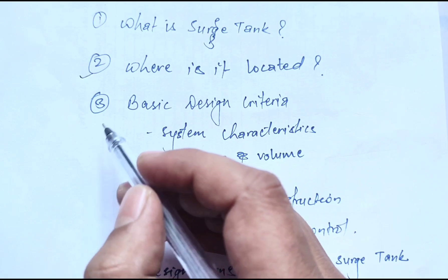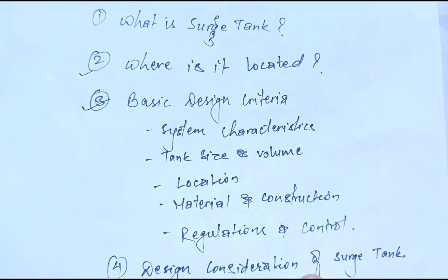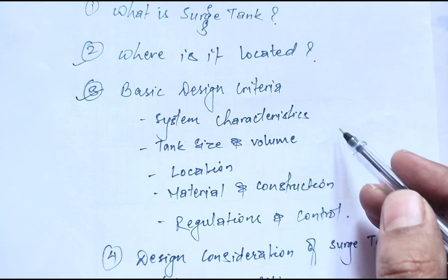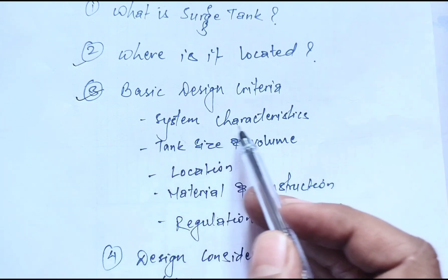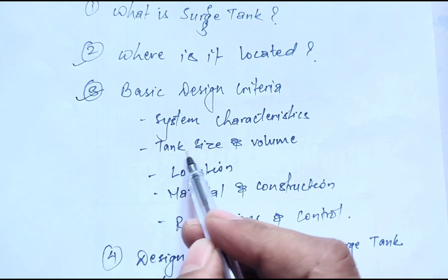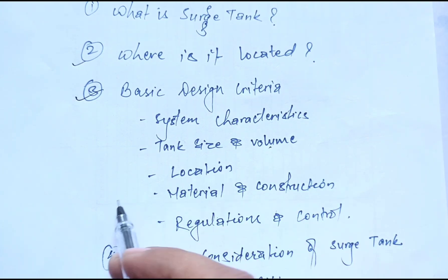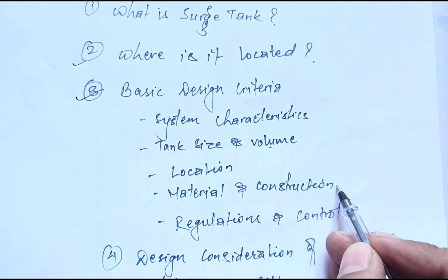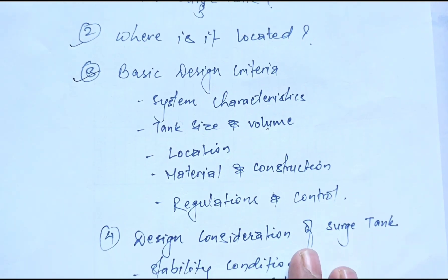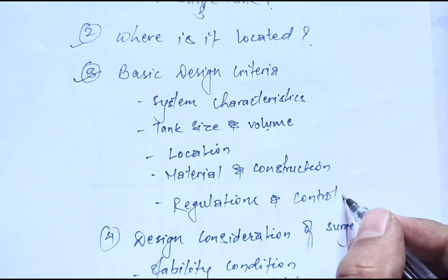Now let's look at the design criteria of the surge tank. For the design criteria, the following key characteristics matter: the system characteristics, size and volume of the tank, location of the surge tank, material used for construction — whether concrete or pipe materials — and regulations and controls for maintenance and other purposes.